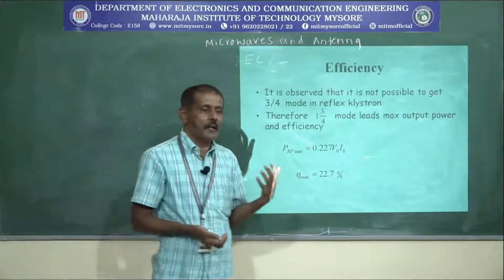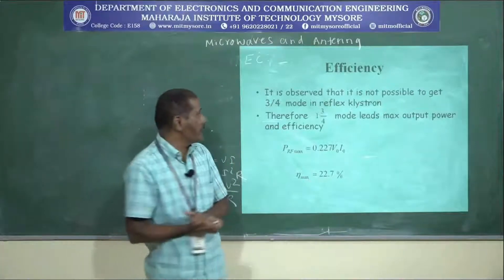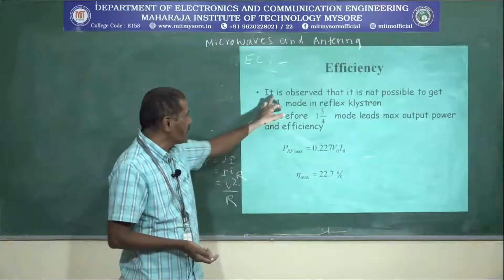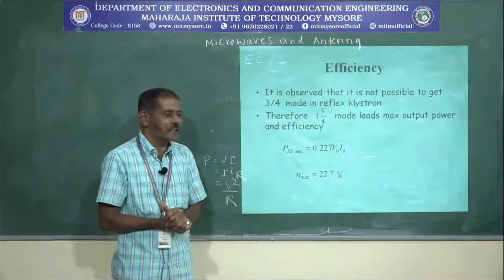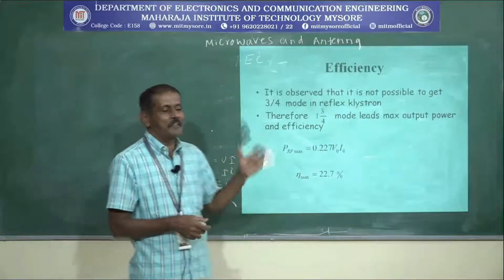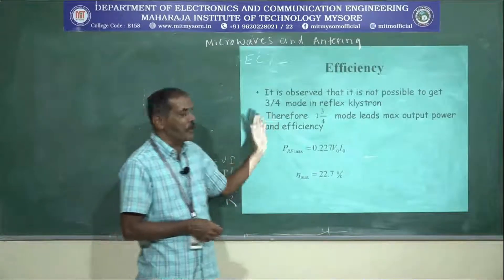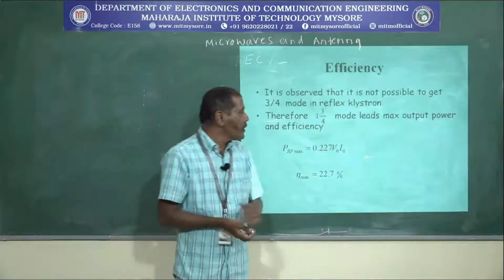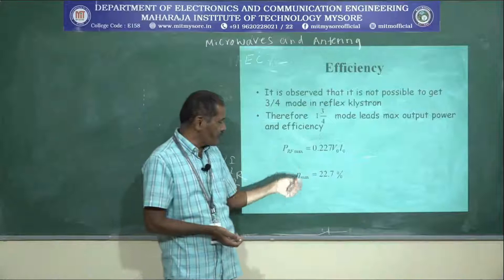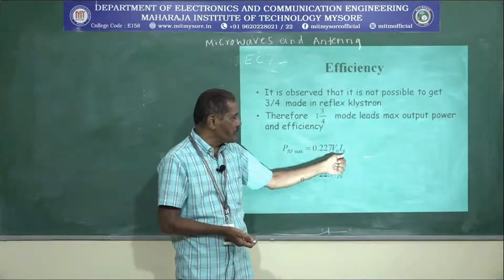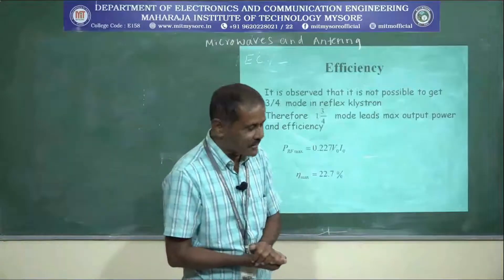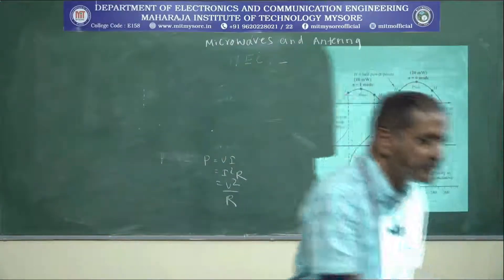The reflex klystron operates in different modes depending on N: 1×(3/4), 2×(3/4), 3×(3/4), etc. It is observed that the 3/4 mode is theoretically present but practically not possible, so it is neglected. Only from the 1 and 3/4 mode onward are we considering. The 1 and 3/4 mode gives maximum output and efficiency. The maximum output is 0.227 × V0 × I0 and the maximum efficiency is 22.7%.